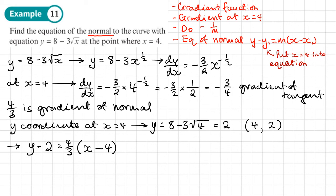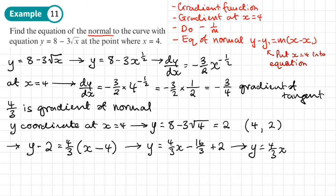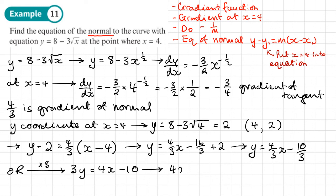We can leave the answer in that form, or write it as y equals mx plus c: y equals 4 over 3 x minus 16 over 3 plus 2, which gives y equals 4 over 3 x minus 10 over 3. Or in the form ax plus by plus c equals 0: multiplying everything by 3 gives 3y equals 4x minus 10, and rearranging gives 4x minus 3y minus 10 equals 0.